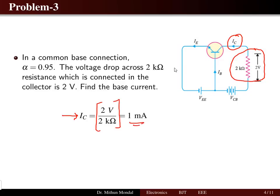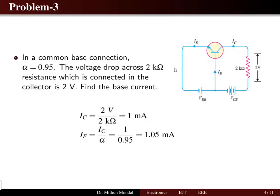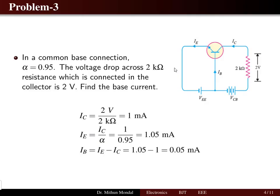The value of alpha is given as 0.95. We relate the emitter current and collector current in terms of alpha and determine the emitter current as collector current divided by alpha, which comes to be 1.05 milliamps. Using KCL again, base current equals emitter current minus collector current, giving 0.05 milliamps.